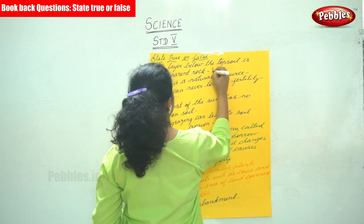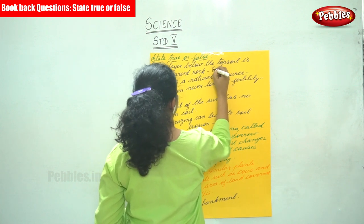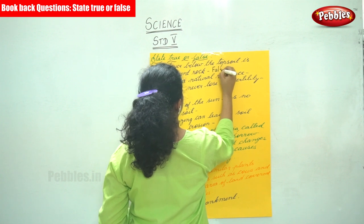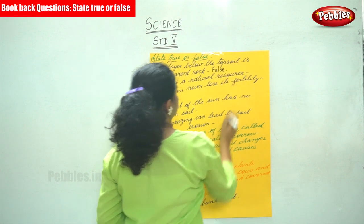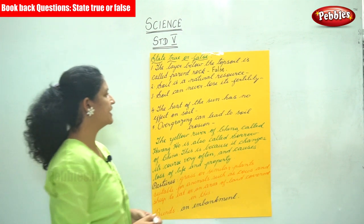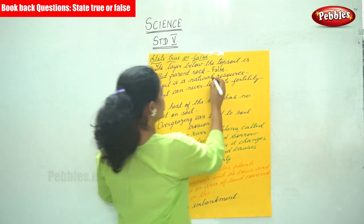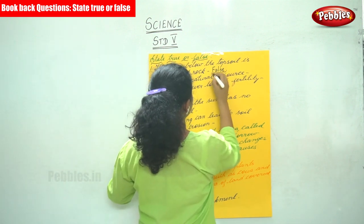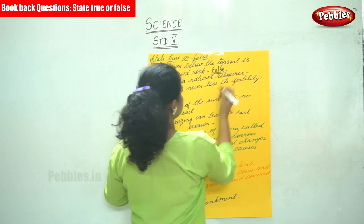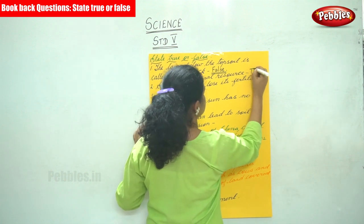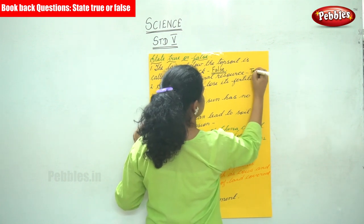The layer below the topsoil is called the parent rock — that is false. The next statement is: soil is a natural resource. It is true. Soil is a natural resource.